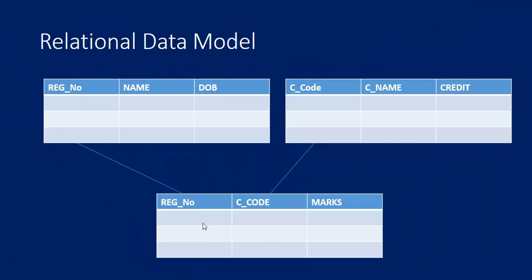The key feature of the relational data model is a third table that represents a relationship. It holds the registration number from the student table, the course ID from the course table, and the marks scored. From this table we can map which student scored how many marks in which subject. This is what the relational model is.